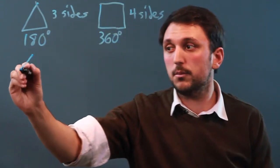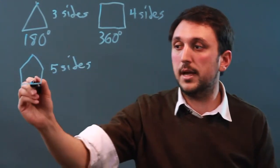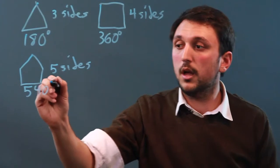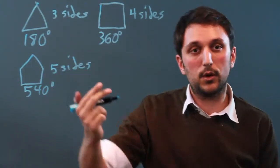You go five sides, pentagon would be five sides, and that's 540. And 20 minutes later, you've drawn your 15-sided figure, and you've figured out how many degrees are in it.